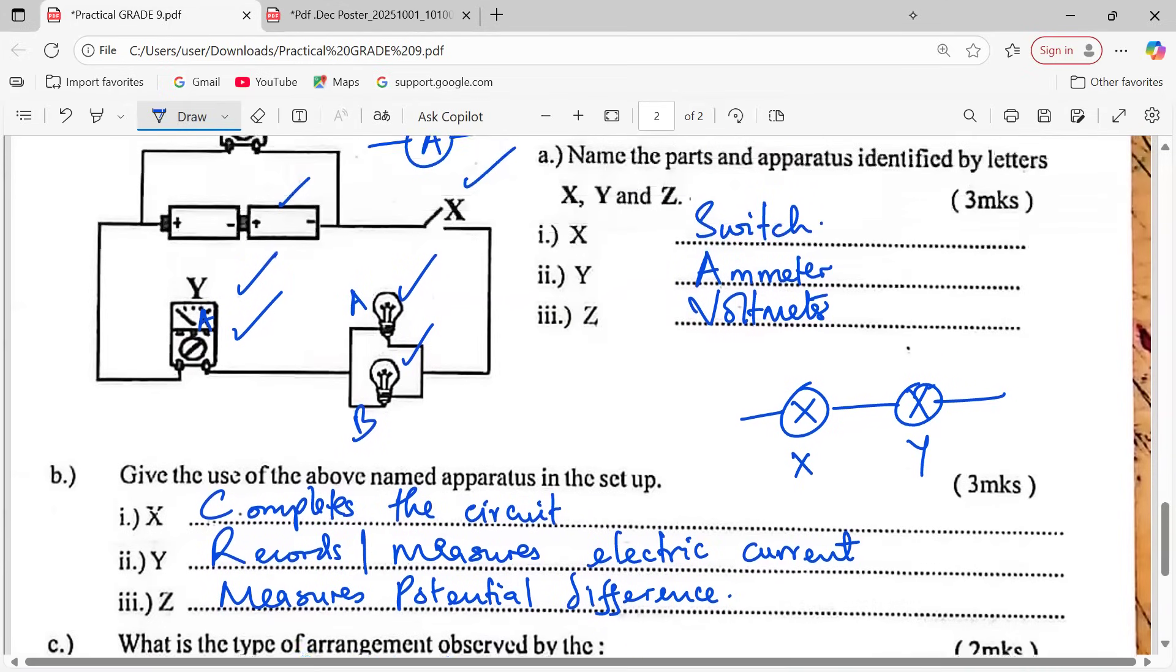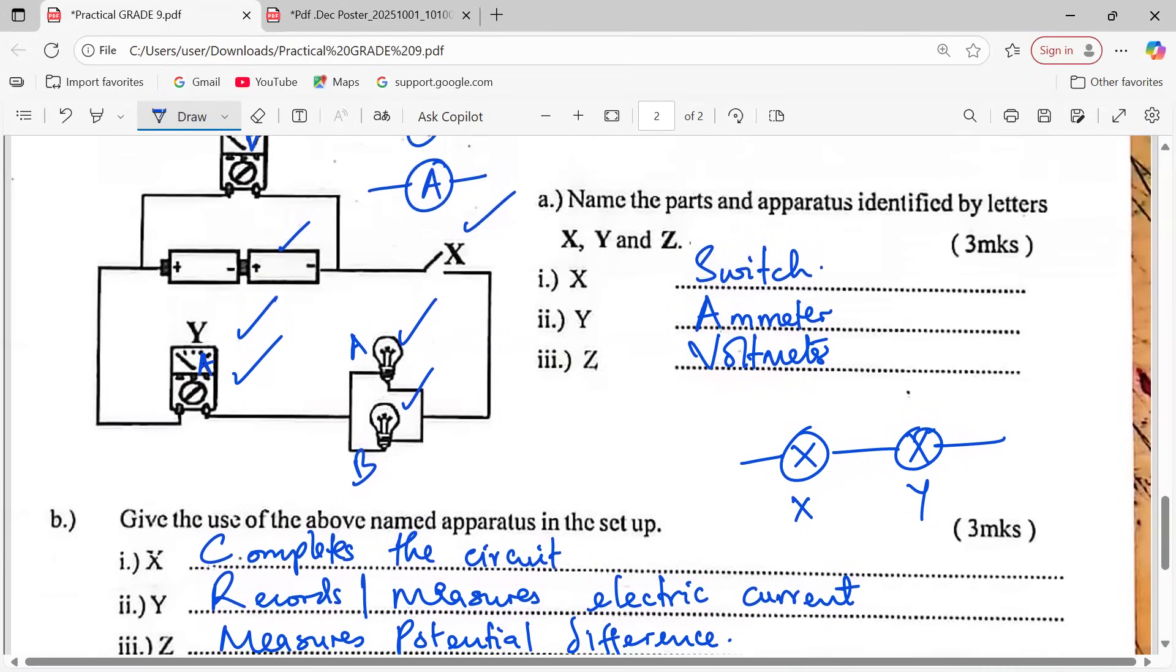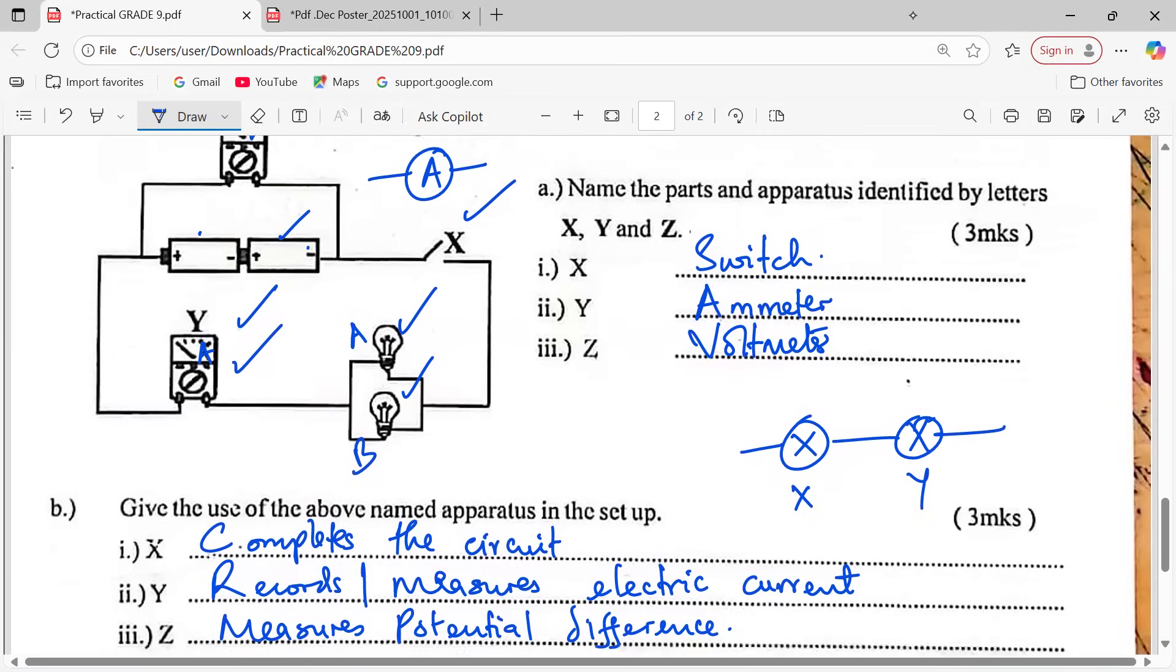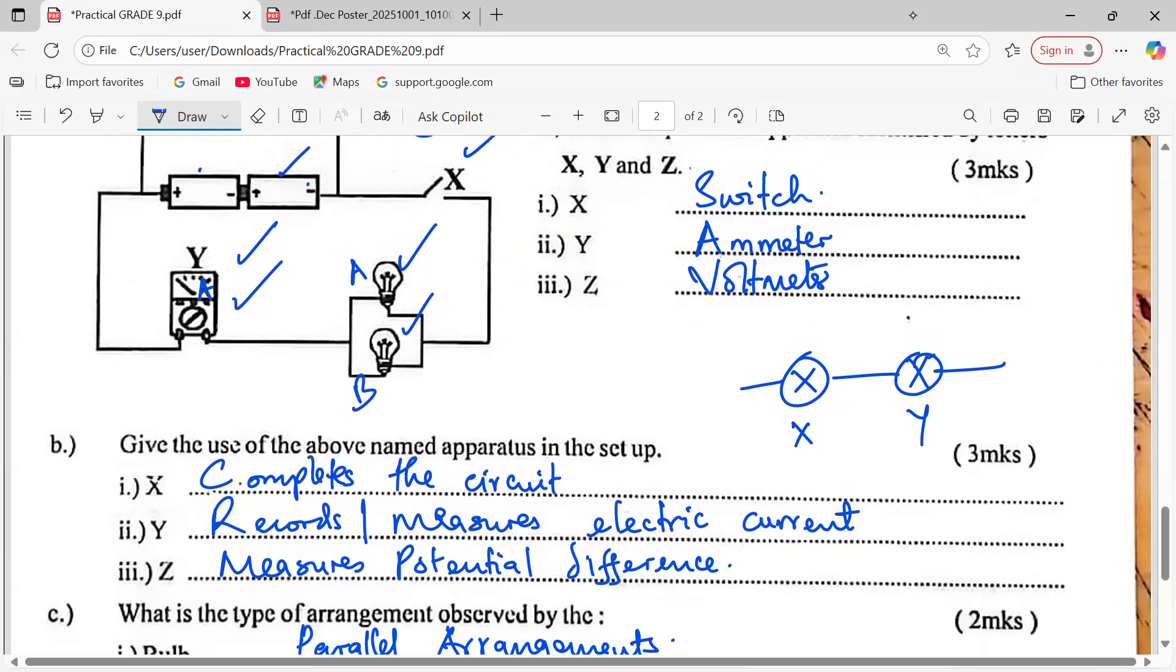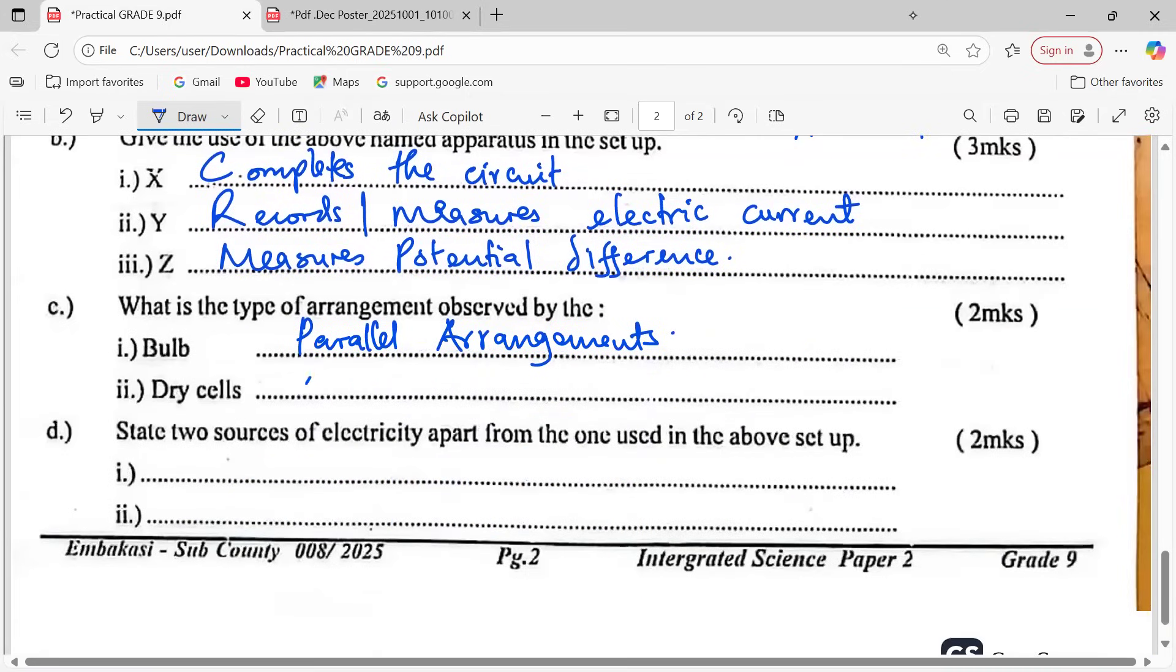Then look at the cells. We have one here and another one here. You see the positive of one is at the negative of the other. That's called a series connection. So they are in a series arrangement.